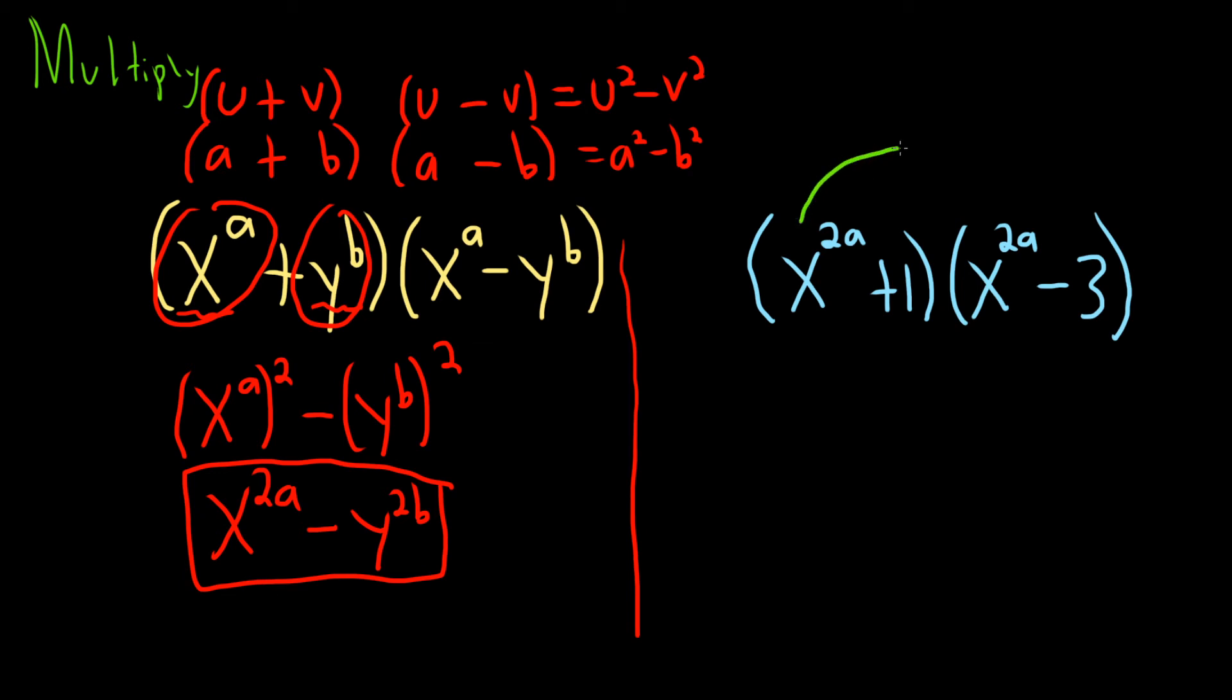So we do x to the 2a times x to the 2a. When you multiply these, you add the exponents. So 2a plus 2a is 4a. And then you do x to the 2a times negative 3. So that's minus 3x to the 2a.